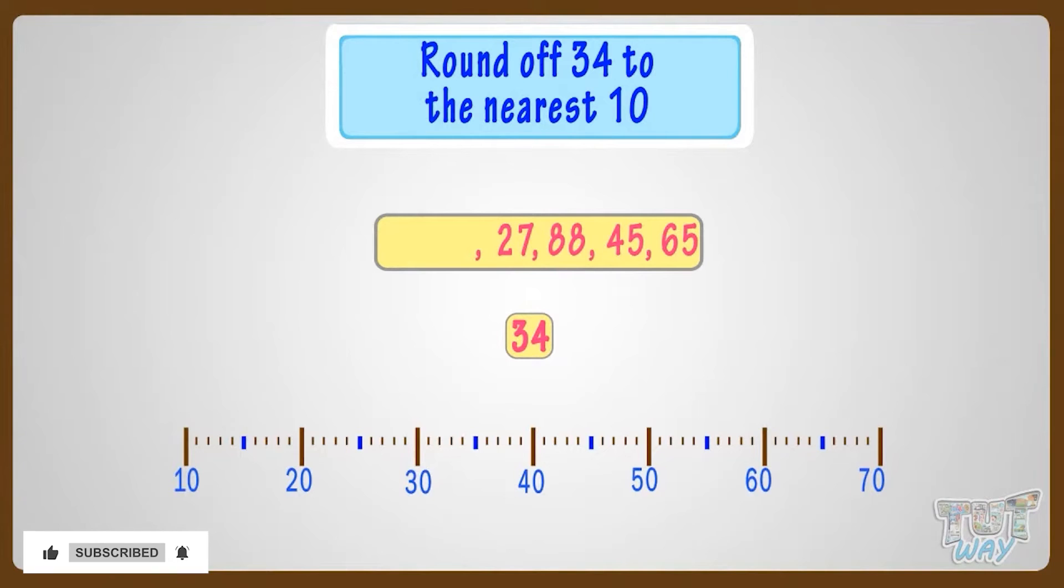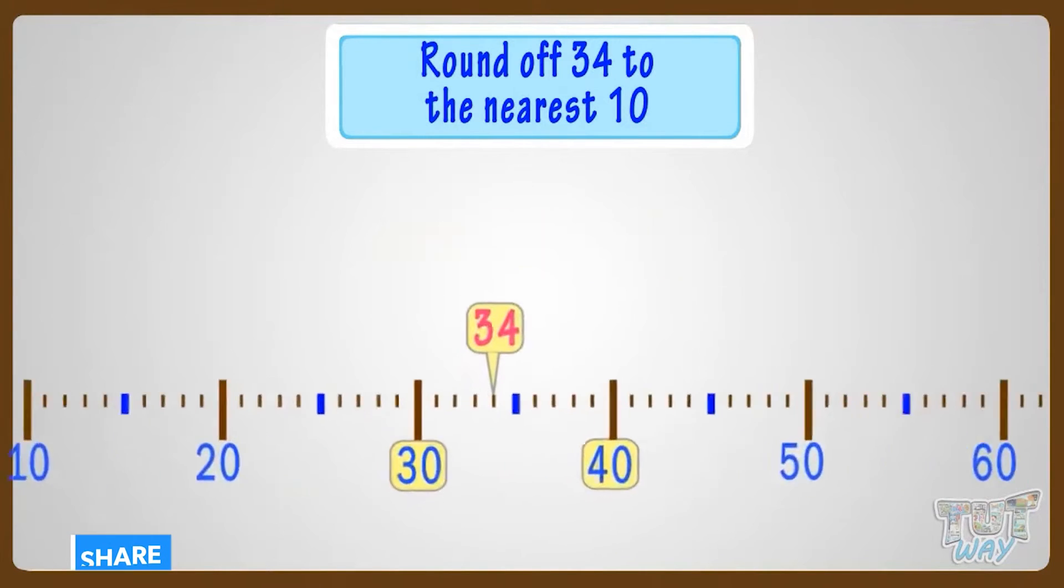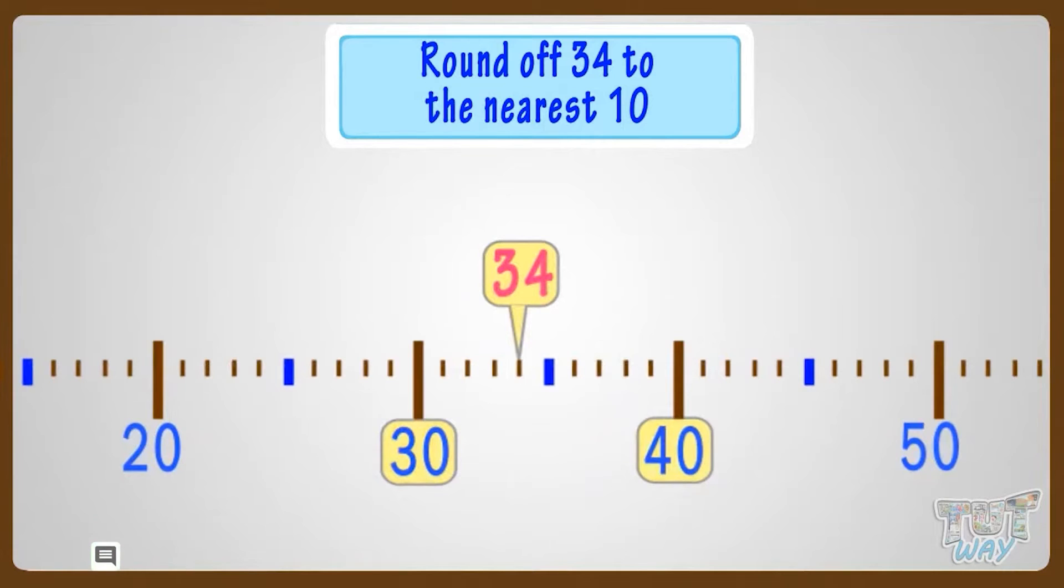It is somewhere between 30 and 40. And we know whenever we have to round off a number, we always have two options.